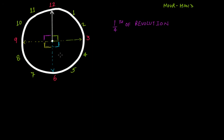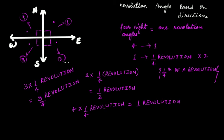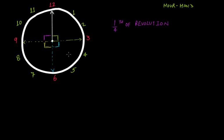What if the clock then moves from 3 to 6? It takes another right angle — one more right angle — so it takes one more one-fourth of revolution. Now it has actually taken two right angles, forming a straight angle. Therefore this will be two right angles, and for two right angles it will be one-by-two revolution.